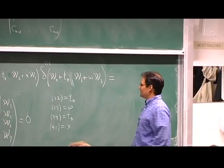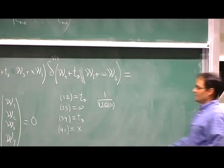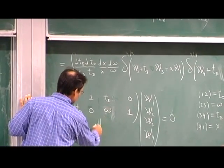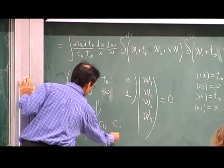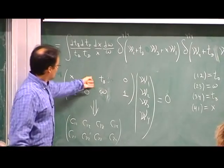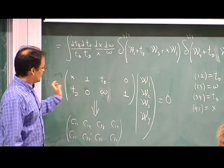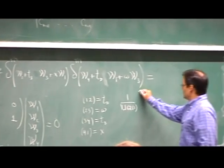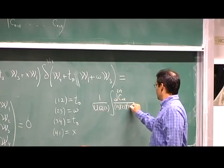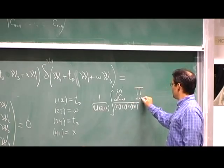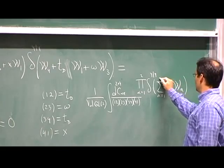Integrating over all these parameters — 2×4 of C_{alpha,a} — divided by (1,2)(2,3)(3,4)(4,1), times the product for alpha=1 to 2 of delta^{4|4} of the sum over C_{alpha,a}·W_a for a=1 to 4.